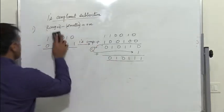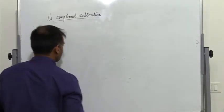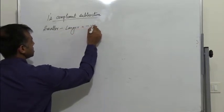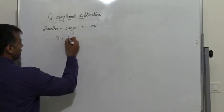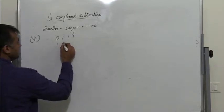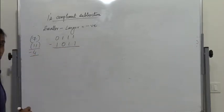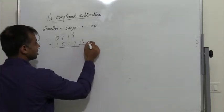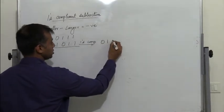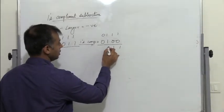Now let's take the second case where we have the smaller number minus the larger number, where the result is negative. Consider 0111, the smaller number corresponding to decimal 7, minus 1011 which corresponds to 11. We need to get minus 4. So we take the 1's complement of the larger number: 1011 becomes 0100. We then add 0111 and 0100 and get 1011.